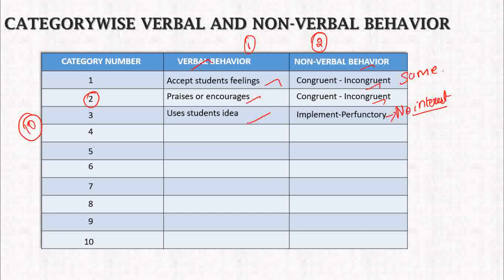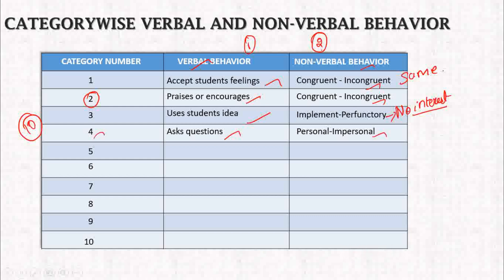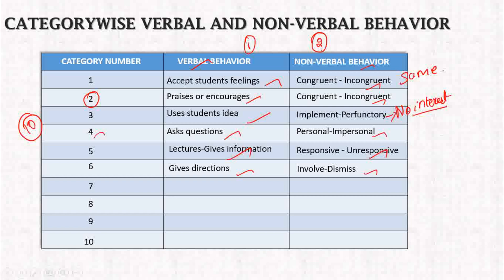The fourth category is when the teacher asks questions — the verbal behavior is 'teacher questions,' and the non-verbal behavior is personal or impersonal. The fifth category is when the teacher lectures — the non-verbal behavior is responsive or unresponsive. The sixth category is when the teacher gives directions — non-verbal can be dismissive. The seventh category is when the teacher criticizes or justifies authority, and the non-verbal behavior is firm or harsh.